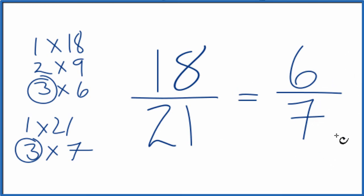If you divide 18 by 21 or 6 by 7, you're going to get the same value since they're equivalent fractions. It's just that we've simplified or reduced 18/21 down to 6/7.